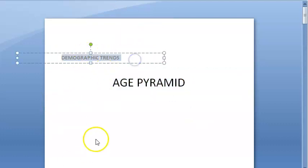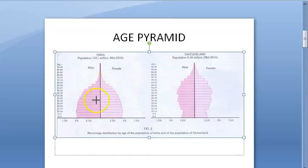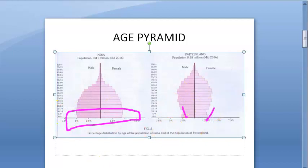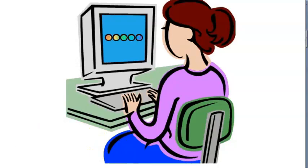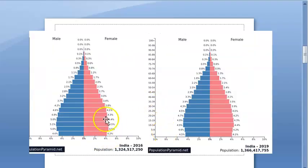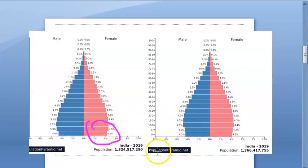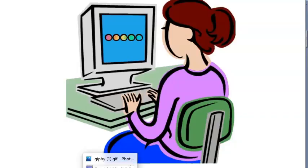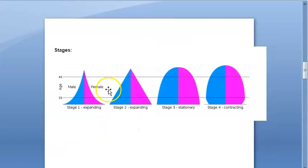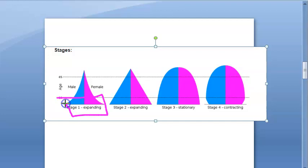Recap: India in 2016 has a broad base; Switzerland in 2016 has a narrow base. Developing countries have higher birth rates, developed countries have lower birth rates. From 2016 to 2019 India's base is narrowing slightly. The female child count is lower than male in India, but in developed countries there is no such disparity between male and female births.